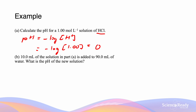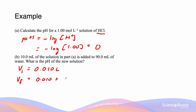In Part B, 10 mL of the solution from Part A is added to 90 mL of water. The initial volume is 0.010 L, and the final volume is 0.010 plus 0.090, which equals 0.100 L. The initial concentration is 1 mol/L, and since concentration equals n over V, the initial number of moles is 0.010.